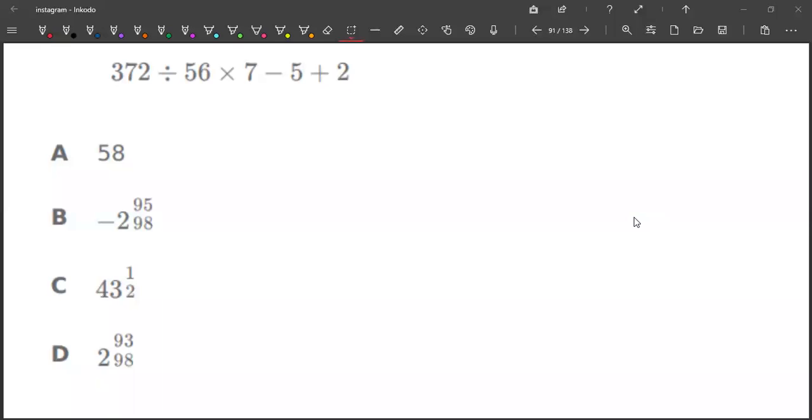Let us solve this question now. So apply BODMAS rule. For two divisions, you can simply write it as 372 by 56 into 7 minus 5 plus 2. This is minus 3, right? Let me write it directly as minus 3.